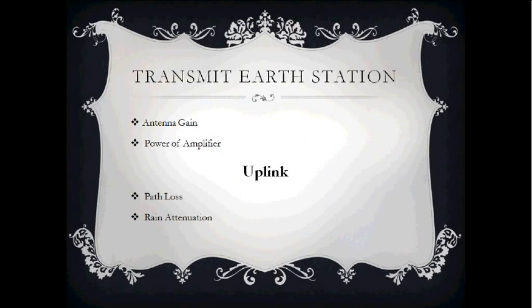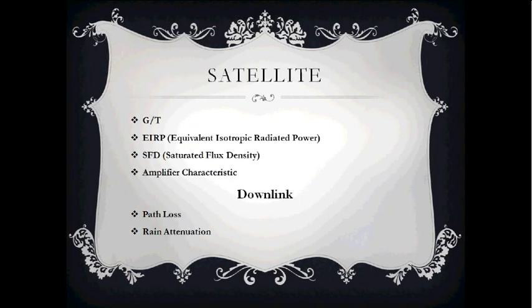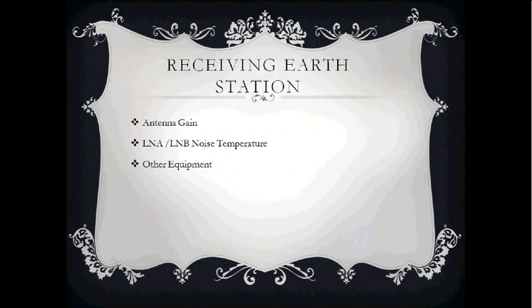For the transmit Earth station, we consider antenna gain, power of amplifier, uplink path losses, and rain attenuation. For the satellite, we consider gain-to-noise temperature, equivalent isotropic radiated power, saturated flux density, amplifier characteristics, and downlink loss rate and rain attenuation. At the receiving Earth station, antenna gain, low noise amplifier, noise temperature, and other requirements are considered.